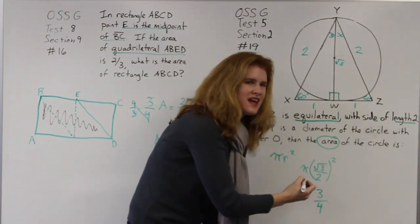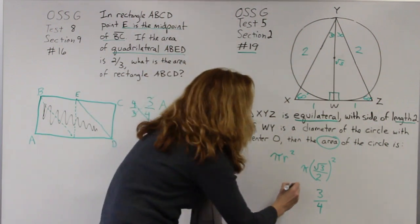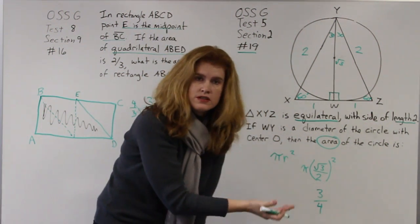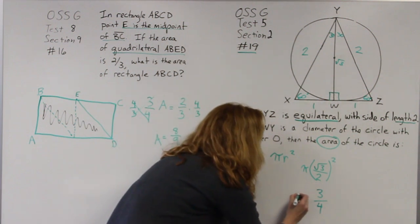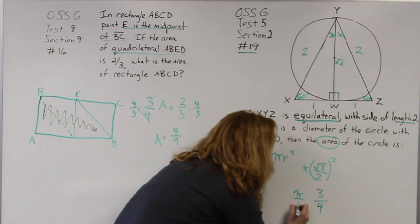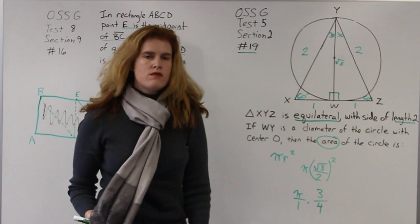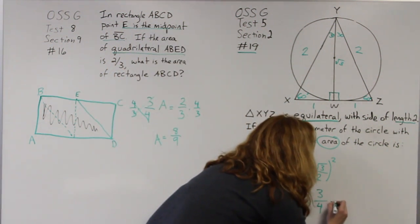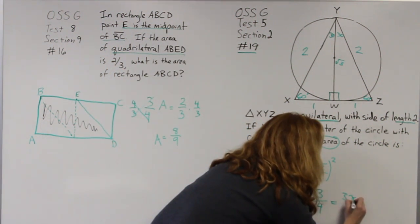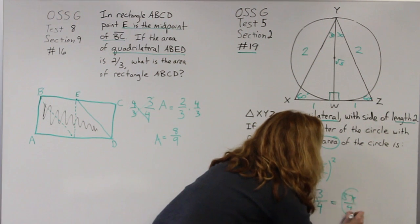Now sometimes I have students get a little confused. They don't know if the pi should go on the numerator or the denominator. I like to think of it as you're multiplying it by pi over 1. So when you do that, you actually have 3 pi over 4.